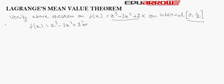First, we will check the first condition, that is, it should be continuous on the closed interval [0, 1/2]. Since it is a polynomial function, it will be continuous everywhere. So the first property is satisfied.